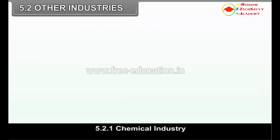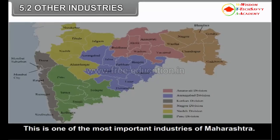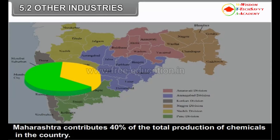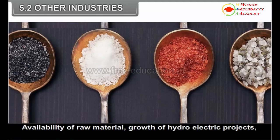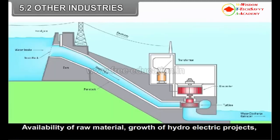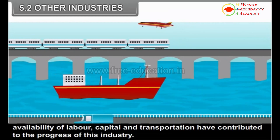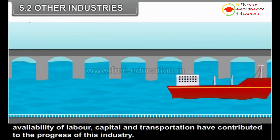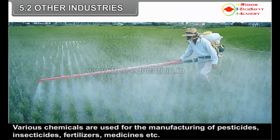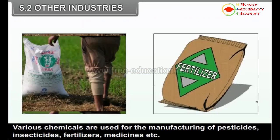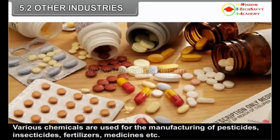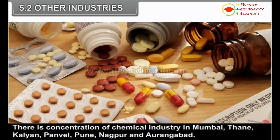5.2.1 Chemical Industry. This is one of the most important industries of Maharashtra. Maharashtra contributes 40% of the total production of chemicals in the country. Availability of raw material, growth of hydroelectric projects, availability of labor, capital and transportation have contributed to the progress of this industry. Various chemicals are used for the manufacturing of pesticides, insecticides, fertilizers, medicines, etc.